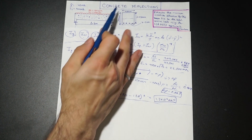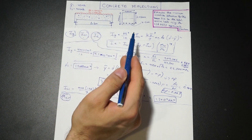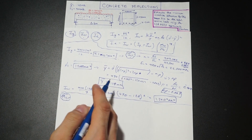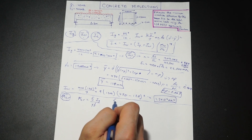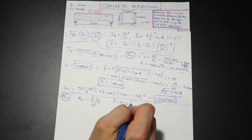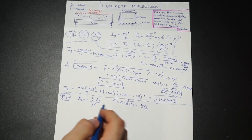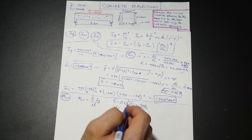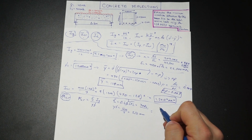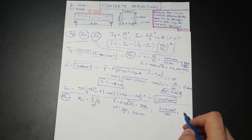Now let's calculate our cracking moment MCR. This is a function of the beam's cross-sectional properties. Essentially, after this moment occurs at any point in the beam, the beam will experience cracking. The formula is MCR equals FR times IG over YT. FR is the modulus of rupture: 0.6 times lambda times the square root of F prime C, with lambda equal to 1 and F prime C equal to 25, giving us 3 MPa. YT for a rectangular section is simply half the beam depth, which is 250 mm. So MCR equals 3 times 4.2 times 10 to the 9, divided by 250, which gives us 50 kN·m.